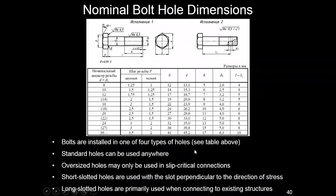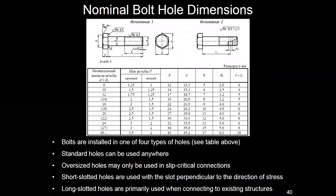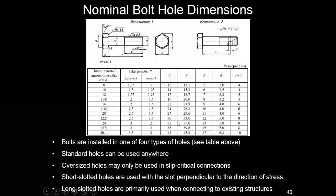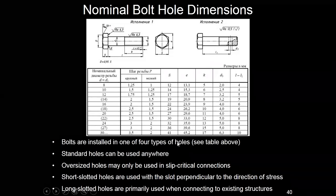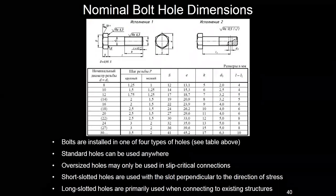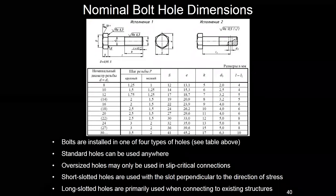We are going to continue our previous lecture about types of connection. We'll finish today talking about bolting connection and maybe start speaking about welding connection. We stopped in the previous lesson on this table, and according to this table we can find information that bolts can be of various sizes, and the pitch of the bolts can vary according to the type of bolt.